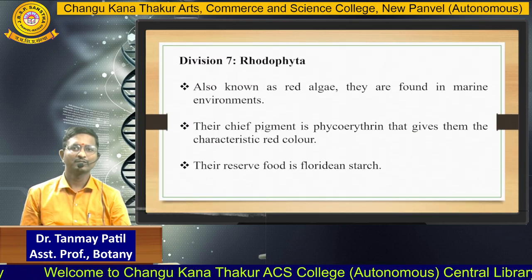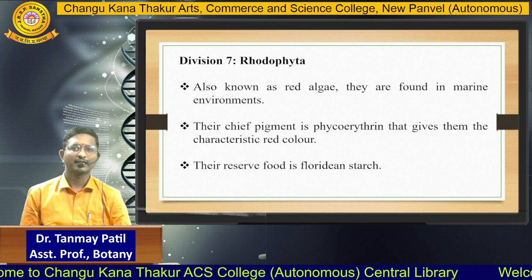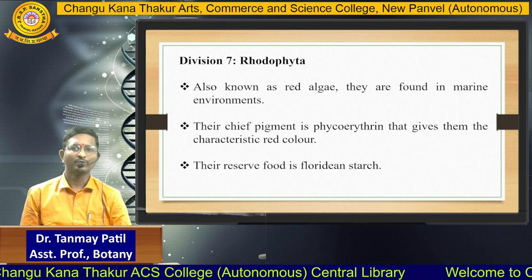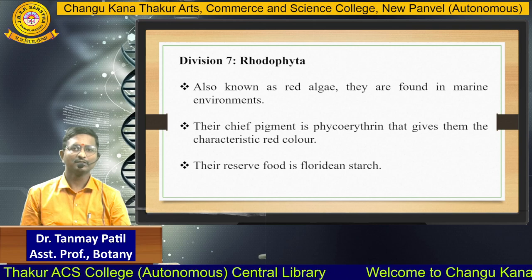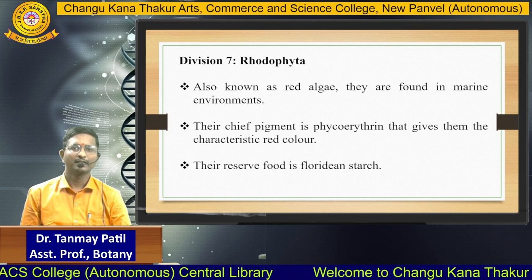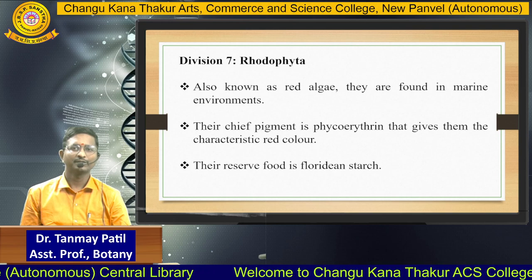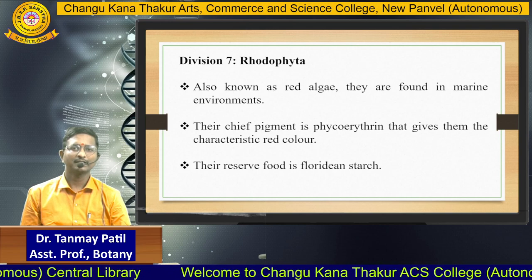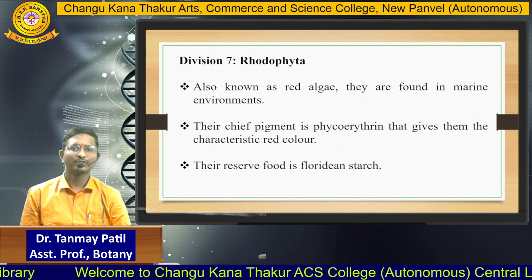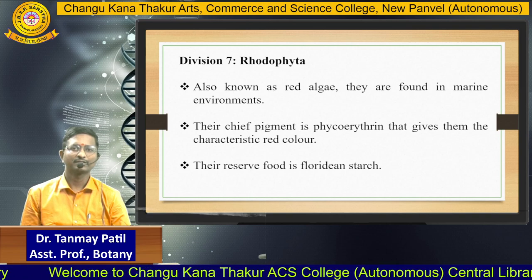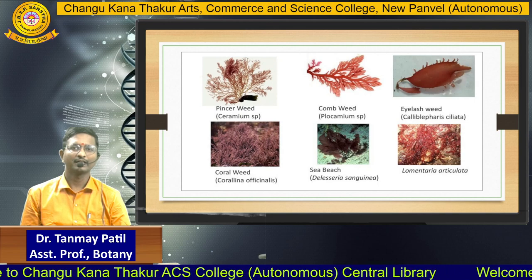The next division is Rhodophyta, also known as red algae. They are found in marine environments. Their chief pigment is phycoerythrin, which gives them the characteristic red color. Their reserve food is floridean starch. Here is a picture of red algae.